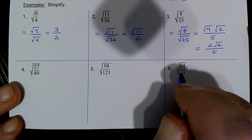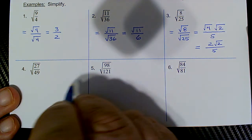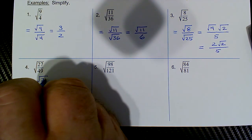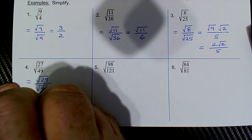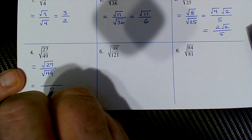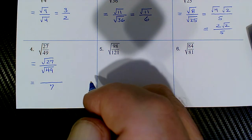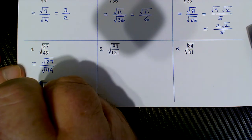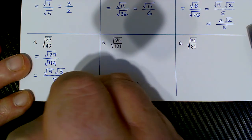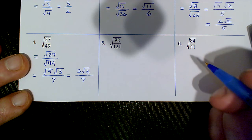For √(27/49): take the square root of the numerator over the square root of the denominator. The square root of 49 is 7 — put that in the denominator. For √27, recognize that 9 is a factor: break that down to √9 · √3. The square root of 9 is 3, so we get 3√3 over 7.